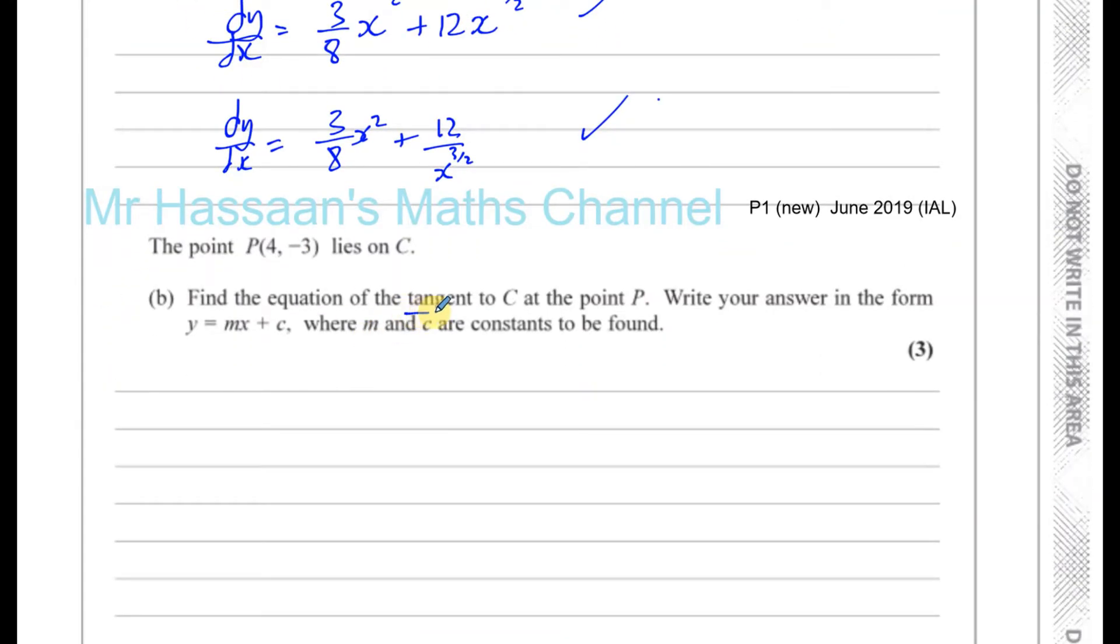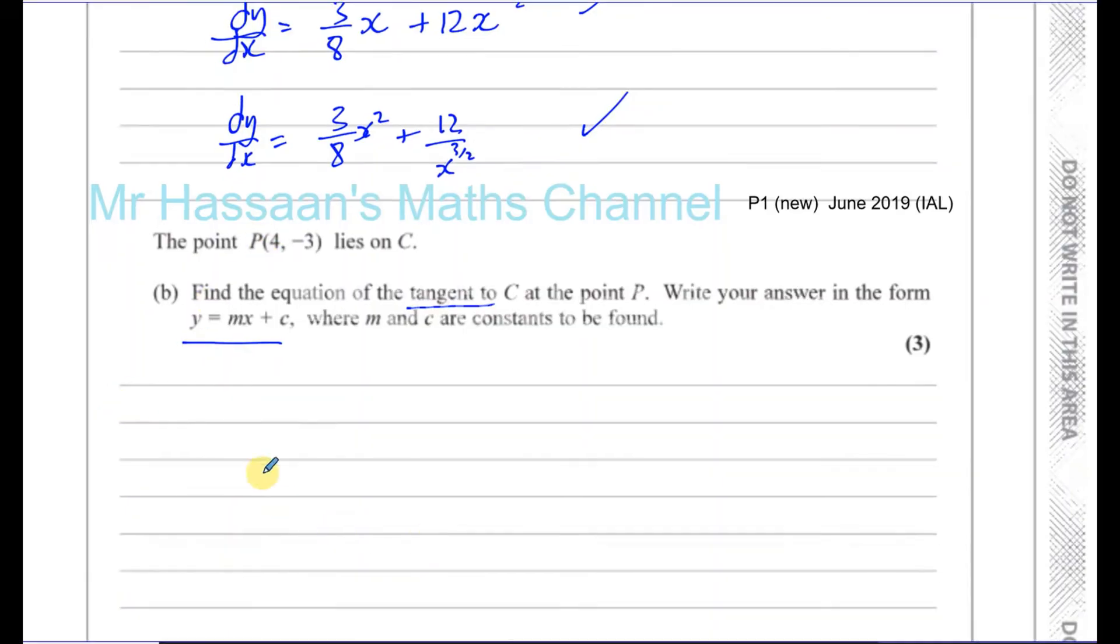Now the tangent to a curve is a straight line. And a straight line is in the form Y equals Mx plus C as I wrote here. In order for you to find the equation of a tangent, you need two things. You need a point on that tangent, which you know is P. So P(4,-3). So we've got a point on the tangent, and we also need to have the gradient of the tangent.